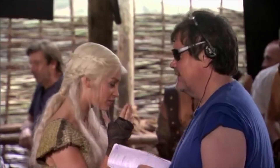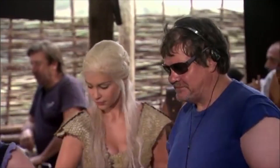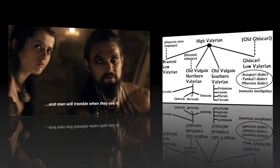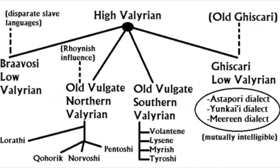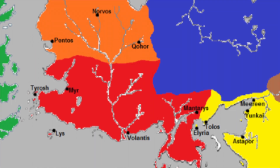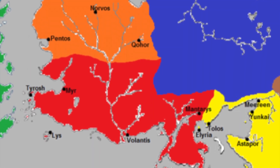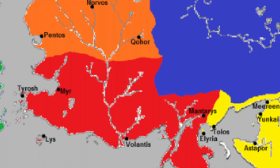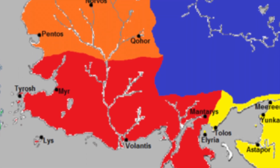Just like in our own world, the languages in Game of Thrones follow these same principles. High Valyrian was the language of the Valyrians. As the Freehold conquered more territory, the natives of those regions adopted High Valyrian. However, after the Doom, the languages transformed into Low Valyrian and then into the multiple languages spoken in the free cities around Essos.